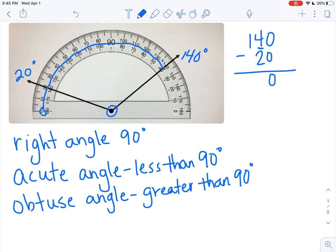So, we have zero minus zero is zero. I have four tens minus two tens, which is two tens. I have 100 minus no hundreds is 100. So, the measure of this angle is 120 degrees.